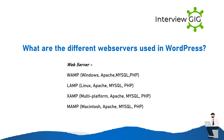What are the different web servers used in WordPress? WAMP (Windows, Apache, MySQL, PHP) and LAMP (Linux, Apache, MySQL, PHP).